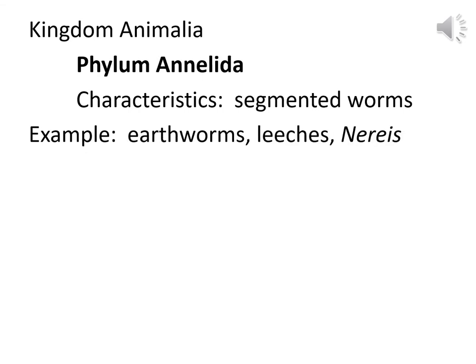Earthworms, leeches, and Nereis are all in Kingdom Animalia with ditto marks, and they're also in Phylum Annelida, which has characteristics of segmented worms. We'll see the three different types because they do have some differences. We're going to look at the different classes of segmented worms.